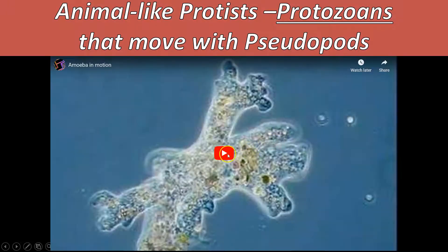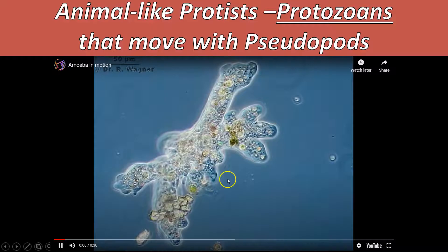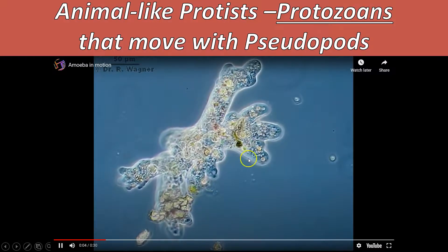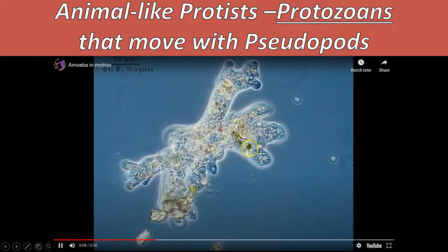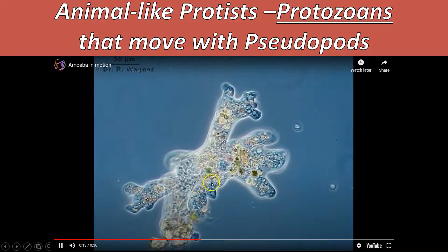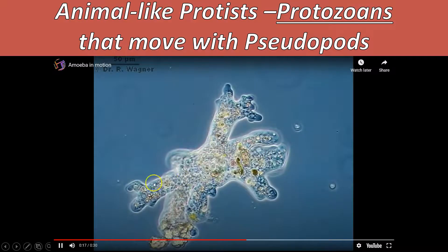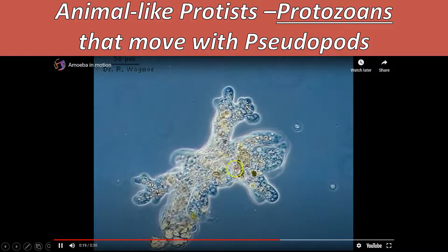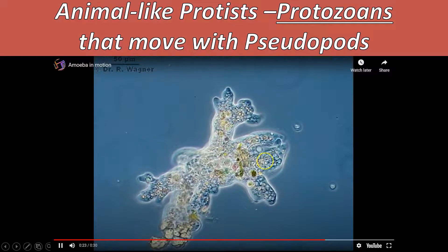Here's a video of a pseudopod moving. This is an amoeba - inside we can see the cell membrane around the outside. Inside, the little things are the organelles and food vacuoles moving around. On one side everything is pushing and moving because it's looking for food, and on the other side it's not finding what it needs, so it's pulling in and pushing into other areas. That's how it moves.